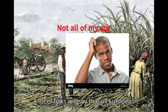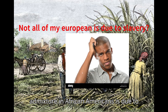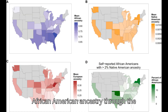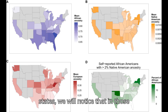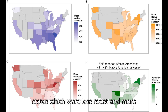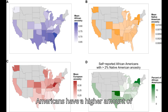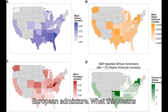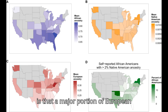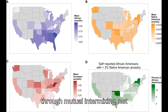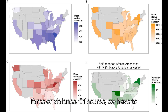A lot of folks will say that all European admixture in African Americans is due to slavery, and that is just inaccurate, at least in regards to the northern states. If we look at the pattern of African American ancestry through the states, we will notice that in those states which were less racist and more liberal historically, the African Americans have a higher amount of European admixture. What this means is that a major portion of European admixture in African Americans came through mutual intermixing, not force or violence.